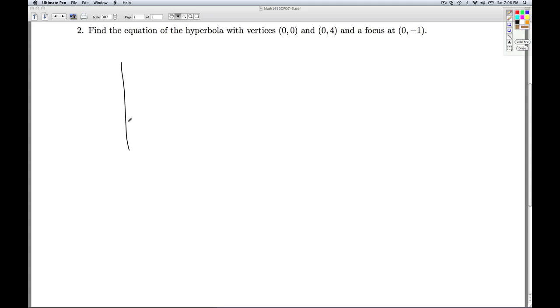So the best thing to do with these kinds of things is draw them out, see what we're dealing with here. So we've got vertices at (0,0), so that's a vertex, and (0,4).